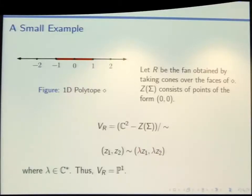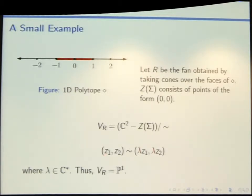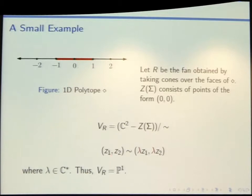Example: for the 1D polytope, taking the fan over the faces gives two one-dimensional cones — the ray going right and the ray going left. The only points thrown away are (0,0), since there are no two-dimensional cones. Working out the identification: n is 1, I have two one-dimensional cones so q is 2, and I'm modding out by C-star to the 2 minus 1. I end up with (z1, z2) equivalent to (lambda * z1, lambda * z2), so my toric variety is just P1.